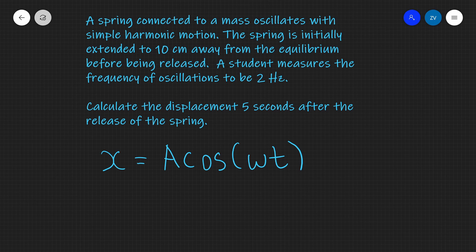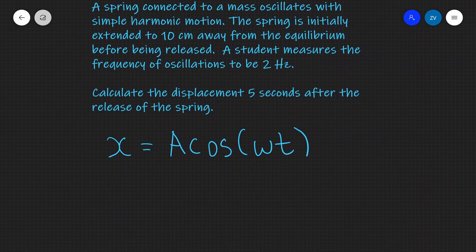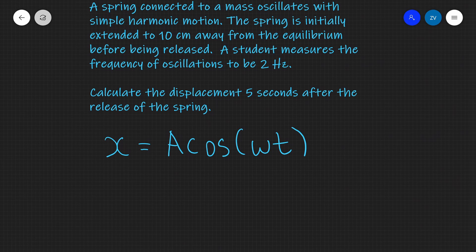In this case, I know that my amplitude is 10 centimeters because this is when the spring is actually released, it's not going to go any further than that. So x will be 10 times 10 to the power of minus 2 multiplied by the cosine of omega t.